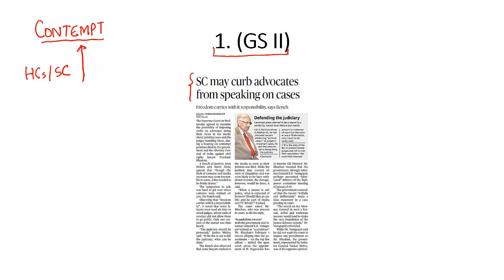Why do they have this power? Because these institutions demand legitimacy from the people. If people start disrespecting or disobeying the orders and directives of these institutions, they will lose respect in society and the administration of justice will be jeopardized. That is why High Courts and the Supreme Court have been given the power to punish people for contempt.